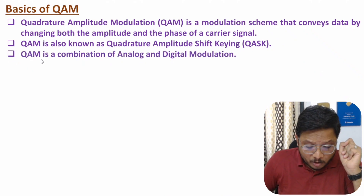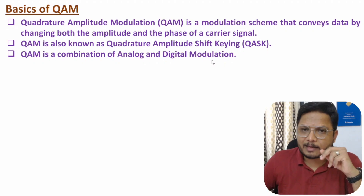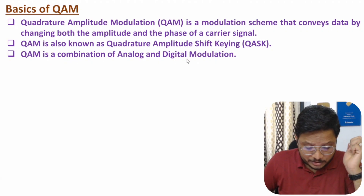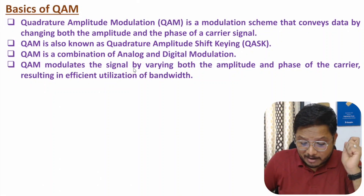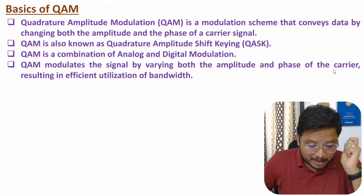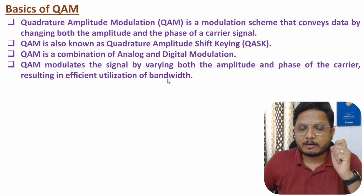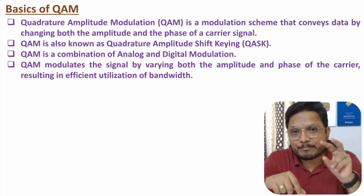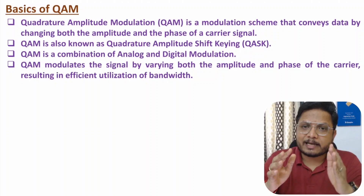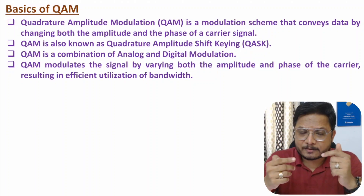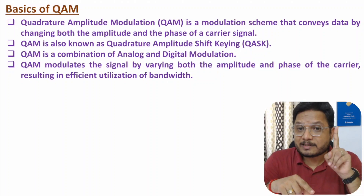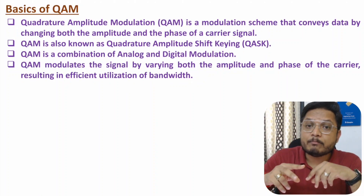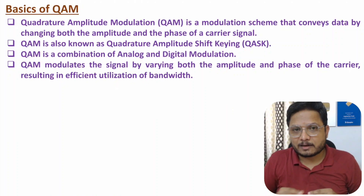QAM is a combination of analog and digital modulation. It modulates the signal by varying both amplitude and phase of the carrier, which results in efficient utilization of bandwidth. With each symbol, one can represent many bits — I'll explain this in the constellation diagram. Because we are doing two things — changing amplitude and changing phase — each symbol carries more bits compared to other digital modulation schemes.